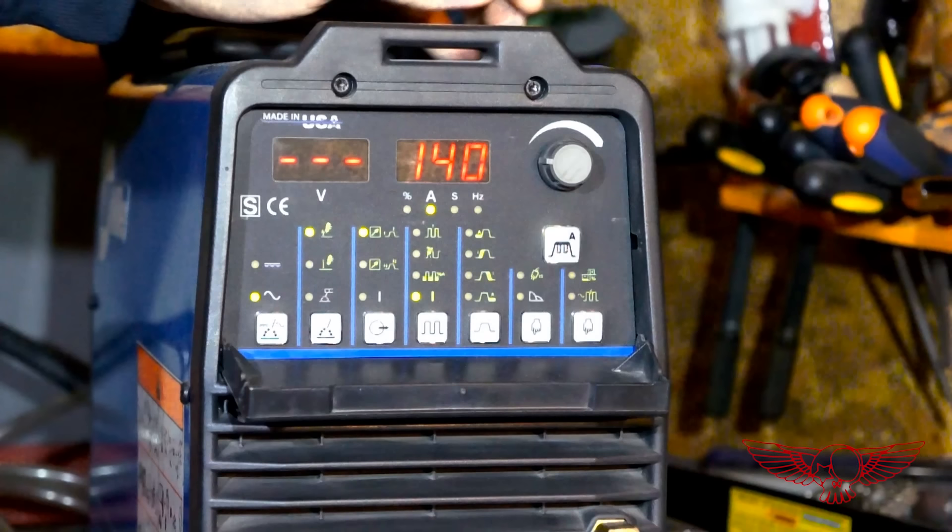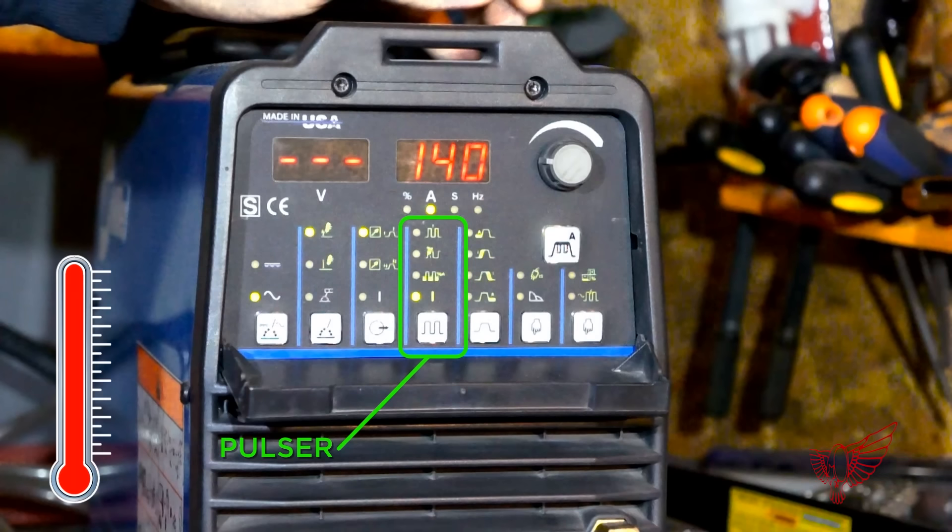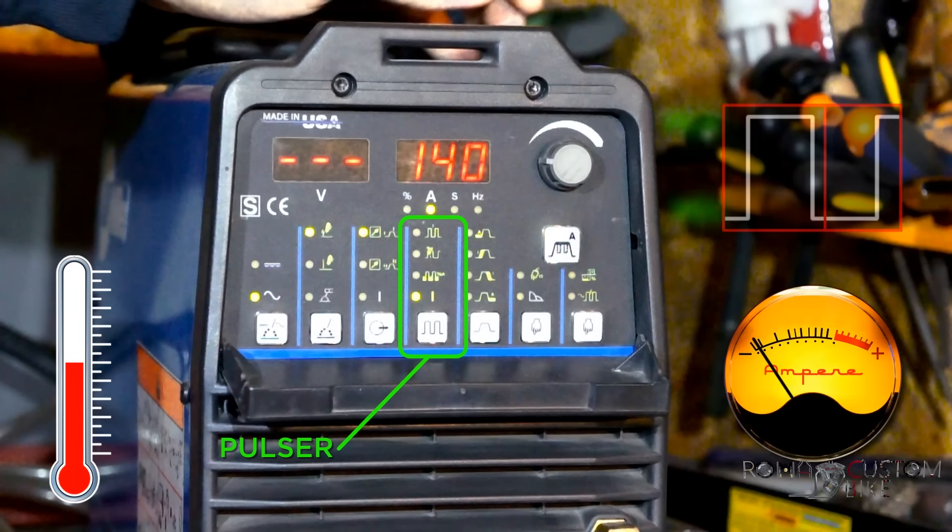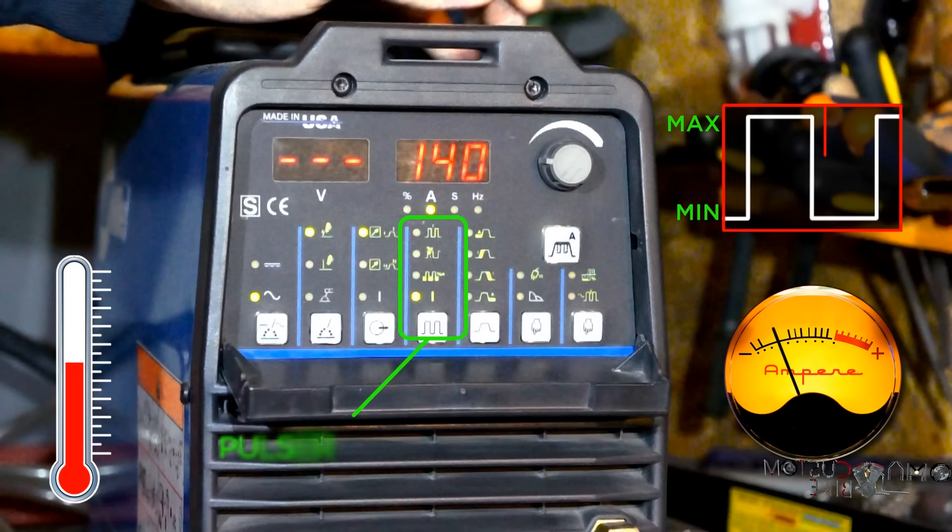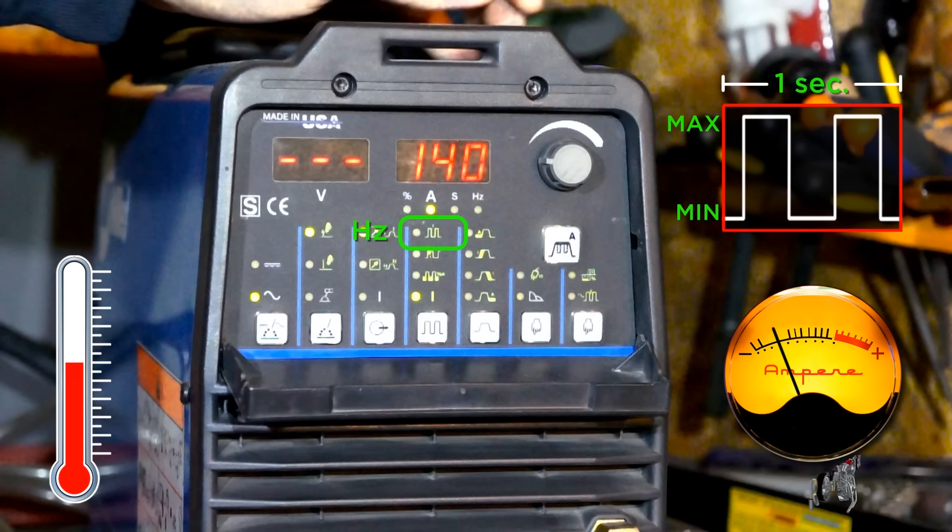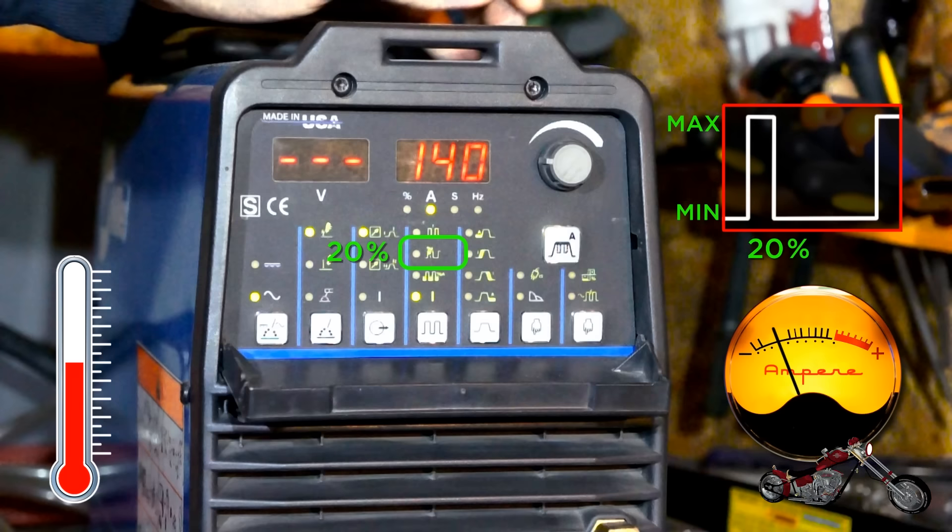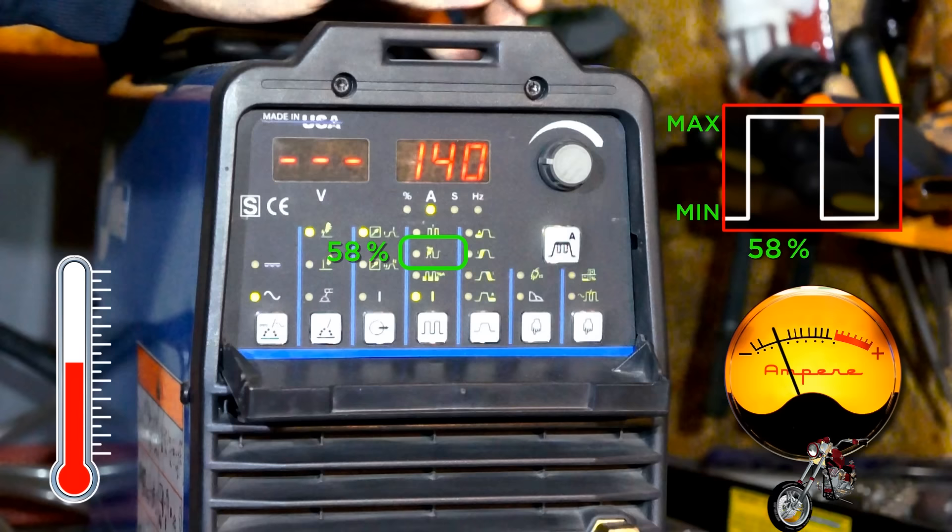Let's take a look at a couple of controls we can find on a TIG welder. The pulsar allows for the operator to keep temperatures of a workpiece in check alternating between two amperage values, the maximum and the minimum. It can decide the frequency of the switches and the percentage of the time of one phase over the other. All of this is to try to keep the workpiece at an ideal temperature.